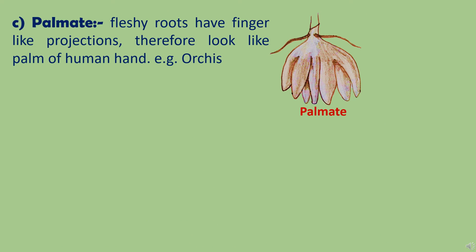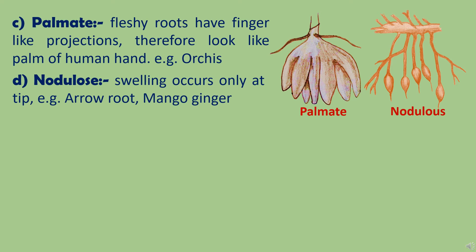Another type of root is the palmate root. These roots have finger-like projections and therefore they look like the palm of a human hand as shown in the picture. Such type of roots are found in Orchis, which is an orchid plant, and every year older palmate roots perish and new ones arise at the base of an older one. Then we have nodulose roots. In nodulose roots, swelling occurs at the tip of a root as shown in the picture. These roots are found in arrowroot, which is a rich source of starch, and mango ginger, which belongs to the ginger family and has a raw mango flavor — that is why it is called mango ginger.